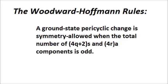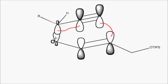This gives us an opportunity to practice the Woodward-Hoffman rules, which state that a ground state pericyclic change is symmetry allowed when the total number of 4q plus 2s and 4ra components is odd. And drawing the overlaps, we can see that we'll have a pair of pi 2s components.